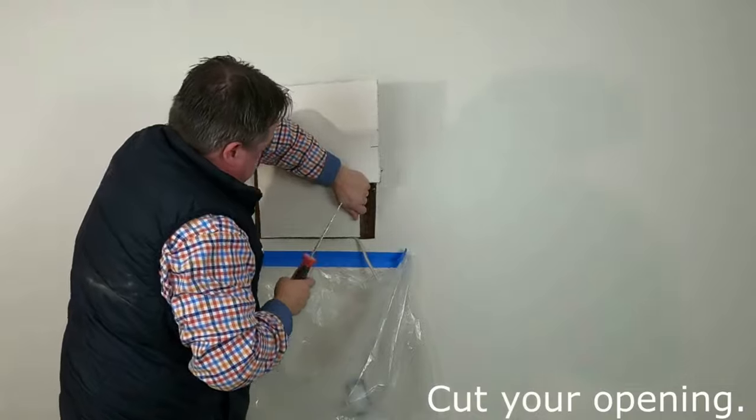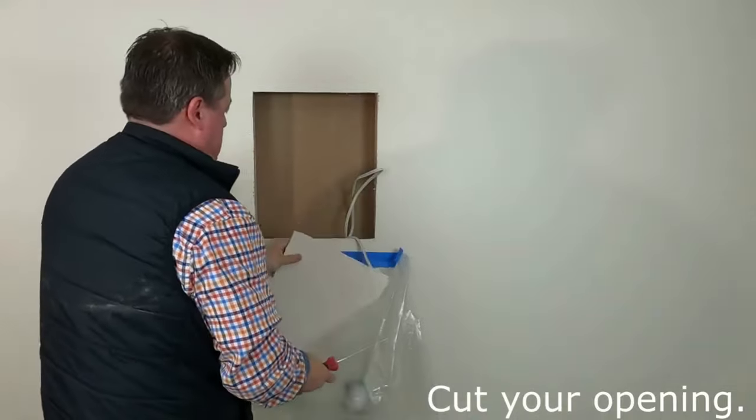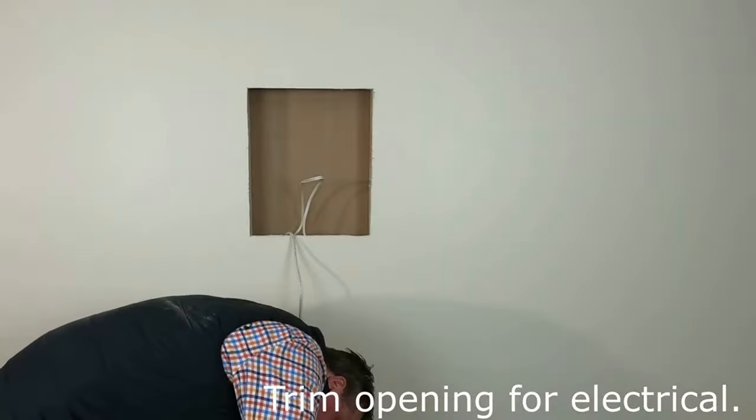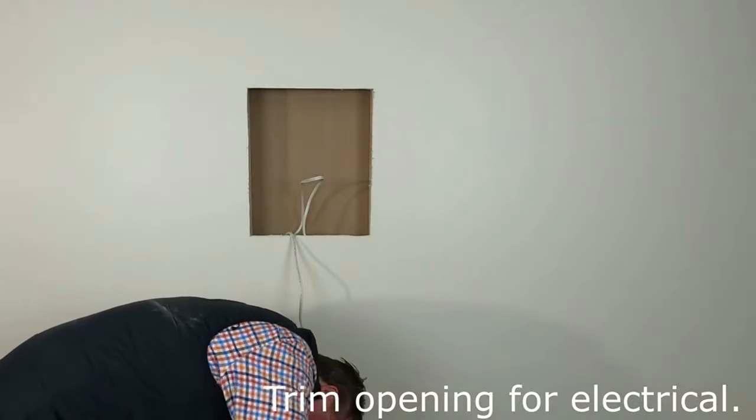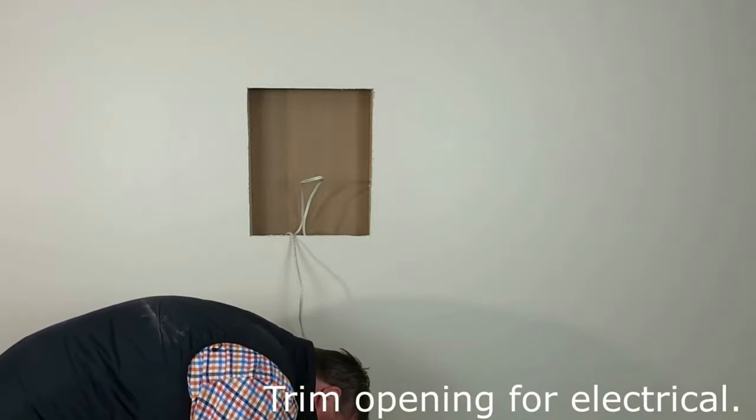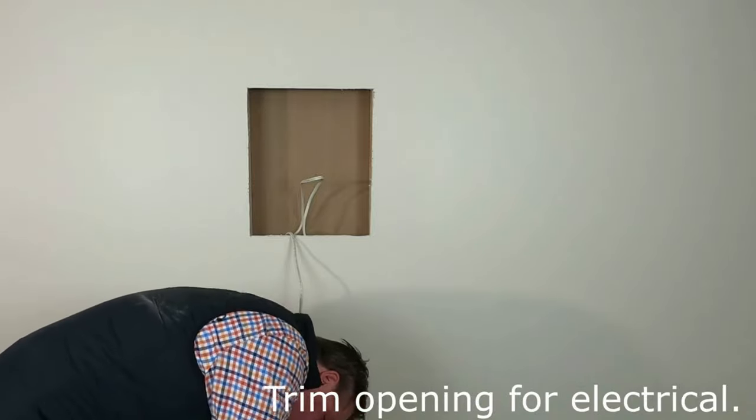As you can see, I'm using our bag trick, so I got a plastic bag below it keeping everything clean. What I'm doing is the boxes have a knockout for a standard J-box opening, so I'm taking my saw and my knife and I'm actually trimming that out.